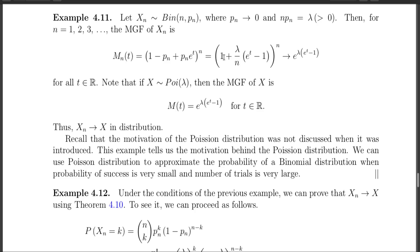Substituting pn = λ/n, we get (1 + (λ/n)·(e^t − 1))^n. This quantity converges to e^(λ(e^t − 1)). This comes from the fact that (1 + x/n)^n converges to e^x, where here x is replaced by λ(e^t − 1). This convergence is true for whatever value of t you take; the moment generating function exists for all t and this convergence holds for all t.